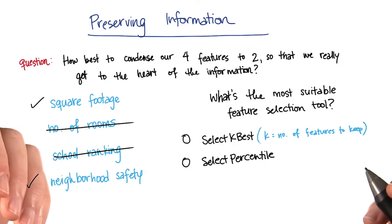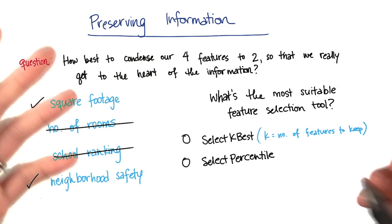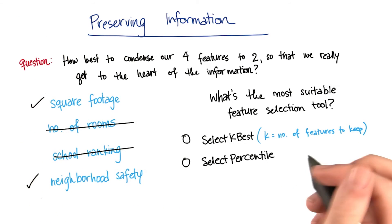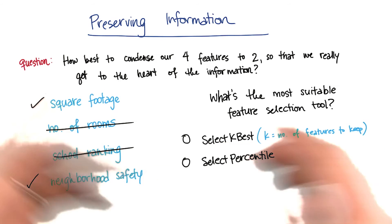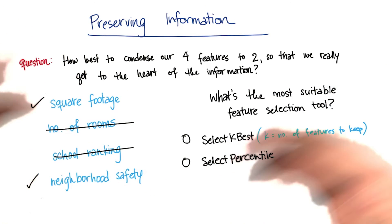Another option is select kbest, and this one's fairly straightforward. What you do is, as one of the arguments, you specify what k is. That's the number of features that you want to keep. So if you put in 10 for k, it's going to take the 10 best features.